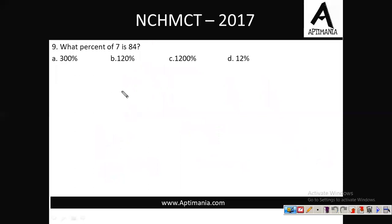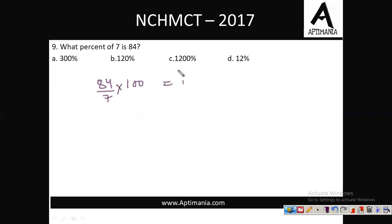Ninth question — very basic. What percent of 7 is 84? 84 over 7 × 100 = 1200 percent. As simple as that.